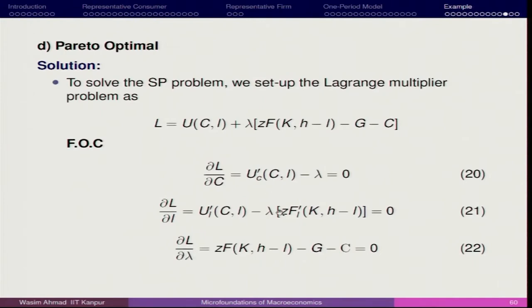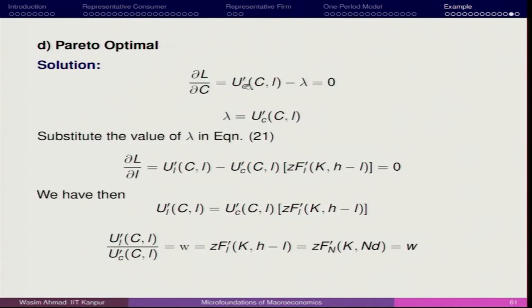We solve in the same way as before and arrive at a similar outcome. Solving equation 1 of the first-order condition with respect to consumption, lambda equals the marginal utility of consumption. Substituting this back and simplifying, we get the expression: the marginal utility of leisure over the marginal utility of consumption equals the marginal product of labour. If you go further with the solution, we arrive at a condition which looks similar to the competitive equilibrium.